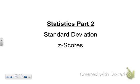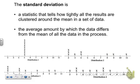This is statistics part two, standard deviation and z-scores. The standard deviation is a statistic that tells how tightly all the results are clustered around the mean in a set of data, or the average amount by which the data differs from the mean of all the data in the process.